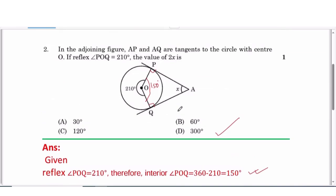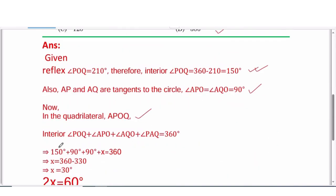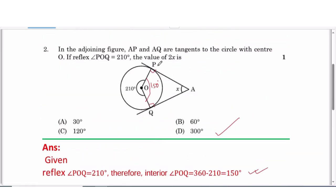Now in the quadrilateral APOQ, interior angle POQ plus APO plus angle AQO plus angle PAQ equals 360 degrees. Now we put the values of the given angles: the interior angle POQ which is equal to 150, and angle APO and AQO is equal to 90, plus angle PAQ equals x. So it is given that angle PAQ is equal to x degrees.